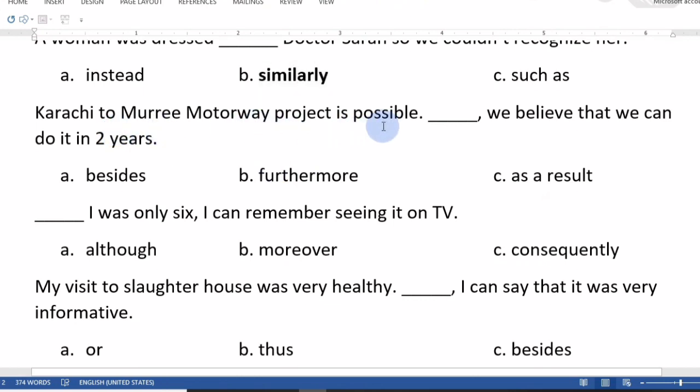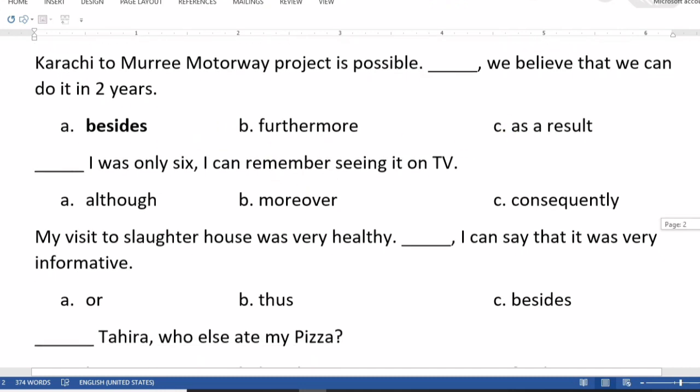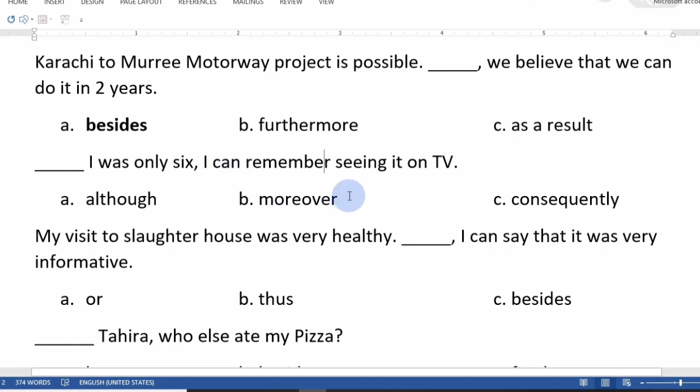Karachi to Murree Motorway project is possible. We believe that we can do it in 2 years. The options are besides, furthermore, or as a result. Besides is the right option. Besides as a connector means in addition to, and it's also a preposition like standing besides the door.